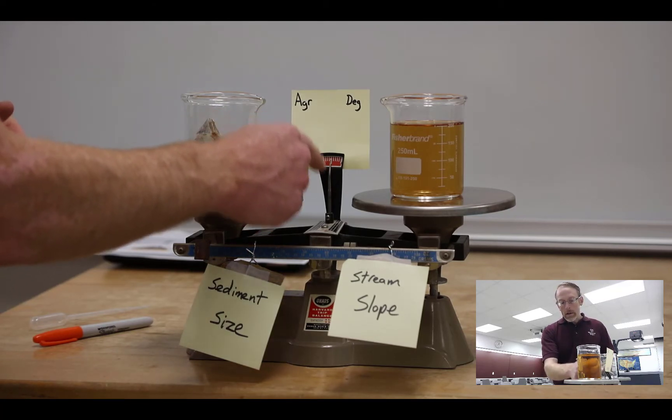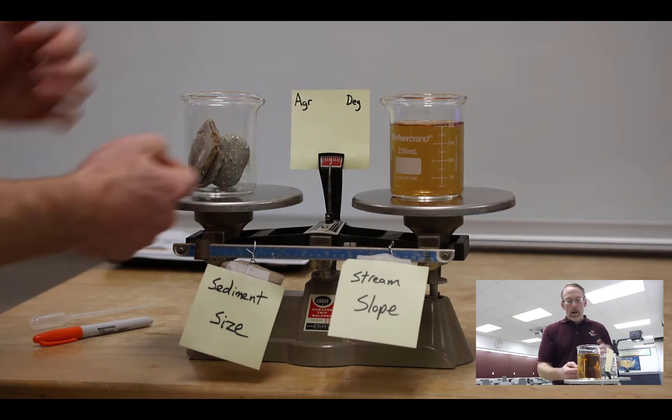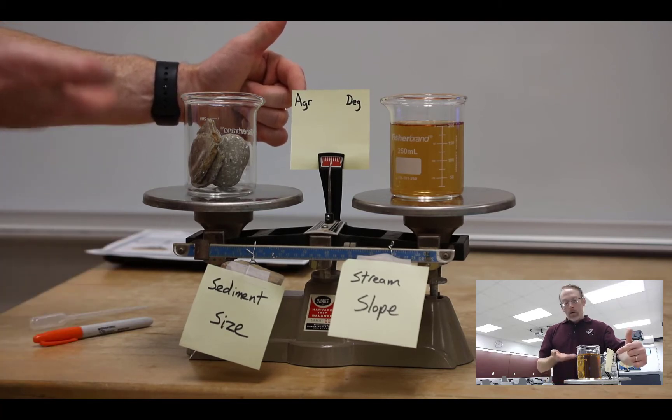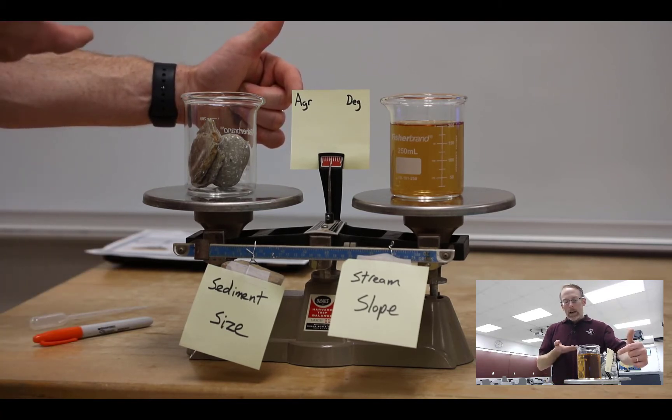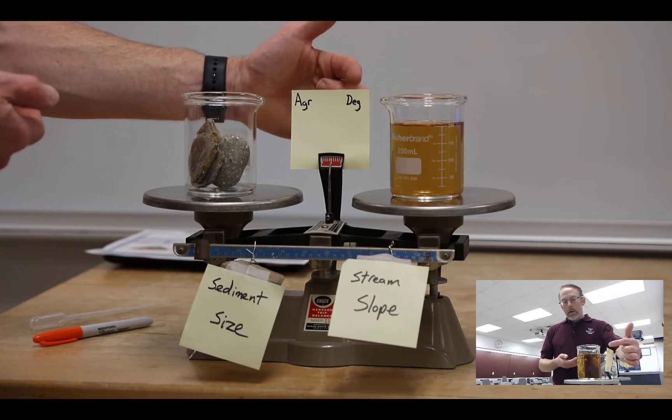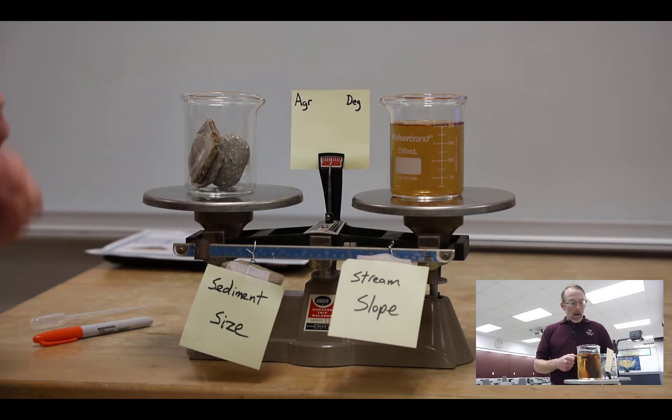The overall needle here in the center of the system points to what's going to happen to the stream channel. If the needle points to this side of the dial, it's going to aggrade or fill in its valley and move upwards. If it moves to this side of the dial, it's going to degrade or incise into its valley.